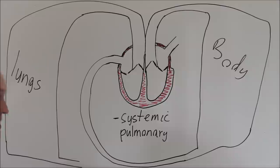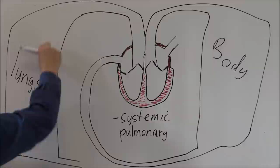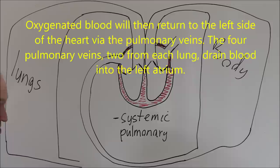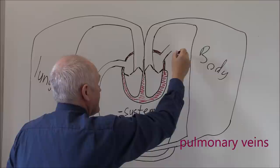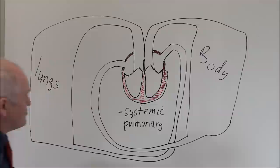The pulmonary arteries are taking blood to the lungs in order to be oxygenated. As the blood goes through the lungs it's going to be oxygenated and give up its carbon dioxide, or most of it, and then the blood is going to drain back via the pulmonary veins back into the left atrium.